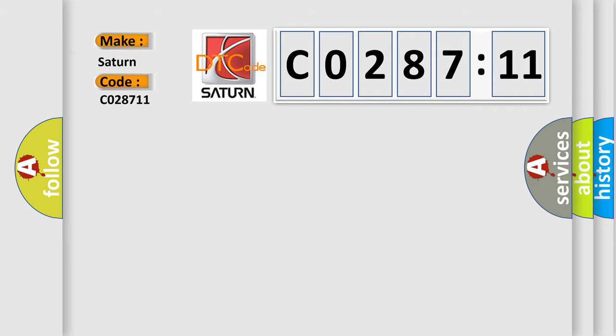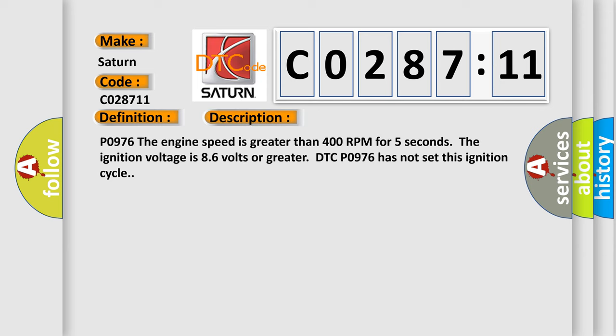The basic definition is Shift solenoid SS2 control circuit low voltage. And now this is a short description of this DTC code. P0976: The engine speed is greater than 400 RPM for 5 seconds, the ignition voltage is 8.6 volts or greater. DTC P0976 has not set this ignition cycle.